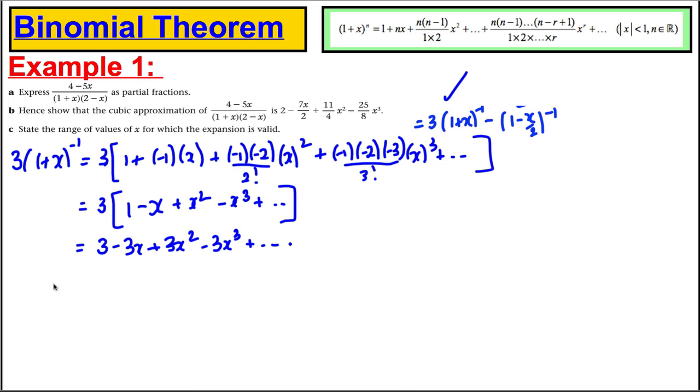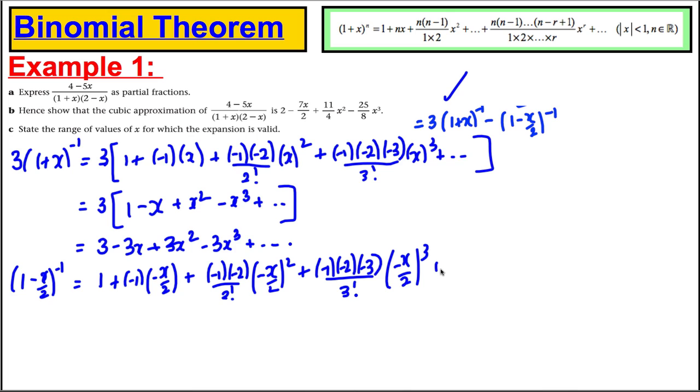Now, let's go for this part here. I'm trying to expand 1 subtract x over 2 to the minus 1. So, I'd have 1 plus negative 1 n multiplied by negative x over 2 plus negative 1 negative 2 over 2 factorial multiplied by negative x over 2 squared plus negative 1 negative 2 negative 3 over 3 factorial times negative x over 2 cubed. And tidying that up, that would be 1 plus x over 2, plus x squared over 4, and plus x cubed over 8.